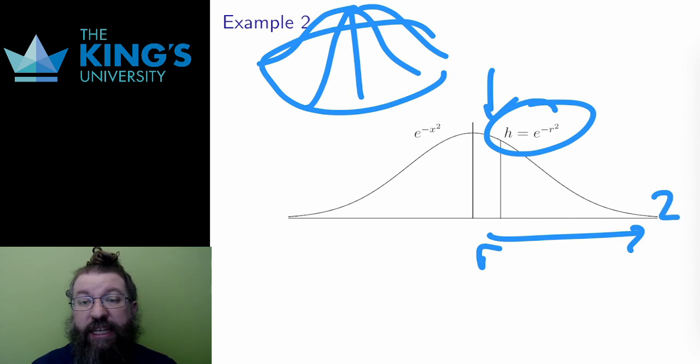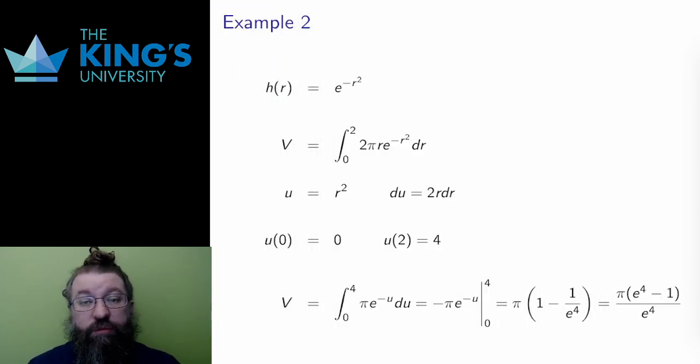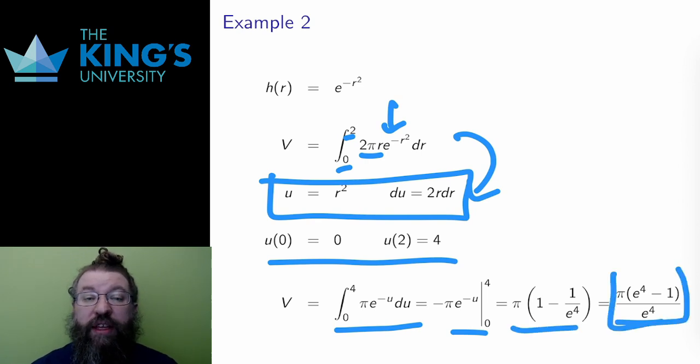So I have the height and I can set up the integral. The integral from 0 to 2 of 2πr times the height. This is a substitution integral. I can use the substitution u = r² with du = 2r dr. The bounds will change from 0 to 4. Then after the substitution, this is just an exponential function. And then I evaluate on the bounds to conclude that the volume of this bell is π times e⁴ minus 1 over e⁴.